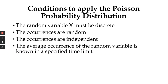Now, what are the conditions to apply the Poisson probability distribution? The random variable X must be discrete — similar to the binomial. The occurrences must be random; we don't need a constant number of arrivals, it must be a random process.